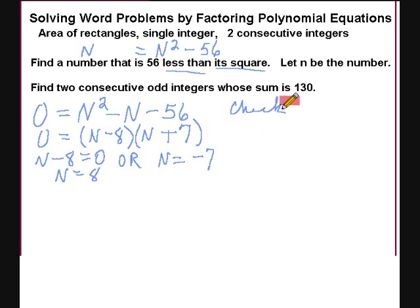Now let's check this out. We said that our number equals n squared, itself squared, minus 56. Well, let's try 8. n equals 8 means that we'll have 8 here with 64 minus 56. Is that true? Sure, that's true.